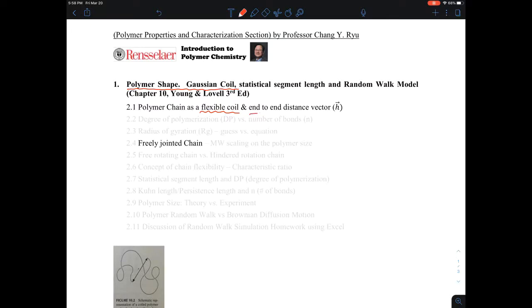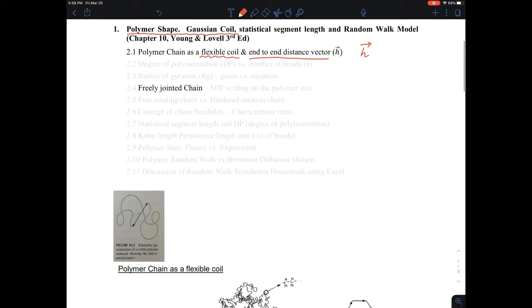The polymer size can be described by something known as the end-to-end distance vector. We are using the symbol H with vectors, but some others are using a different notation.